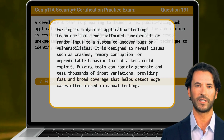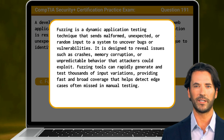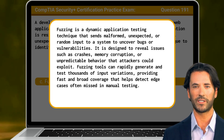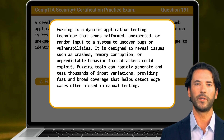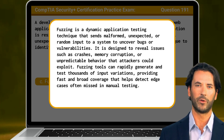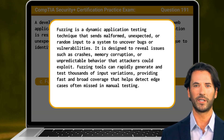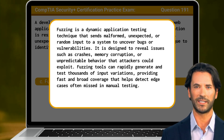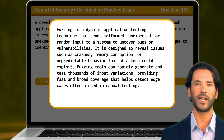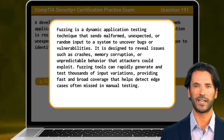Fuzzing is a dynamic application testing technique that sends malformed, unexpected, or random input to a system to uncover bugs or vulnerabilities. It is designed to reveal issues such as crashes, memory corruption, or unpredictable behavior that attackers could exploit. Fuzzing tools can rapidly generate and test thousands of input variations, providing fast and broad coverage that helps detect edge cases often missed in manual testing.